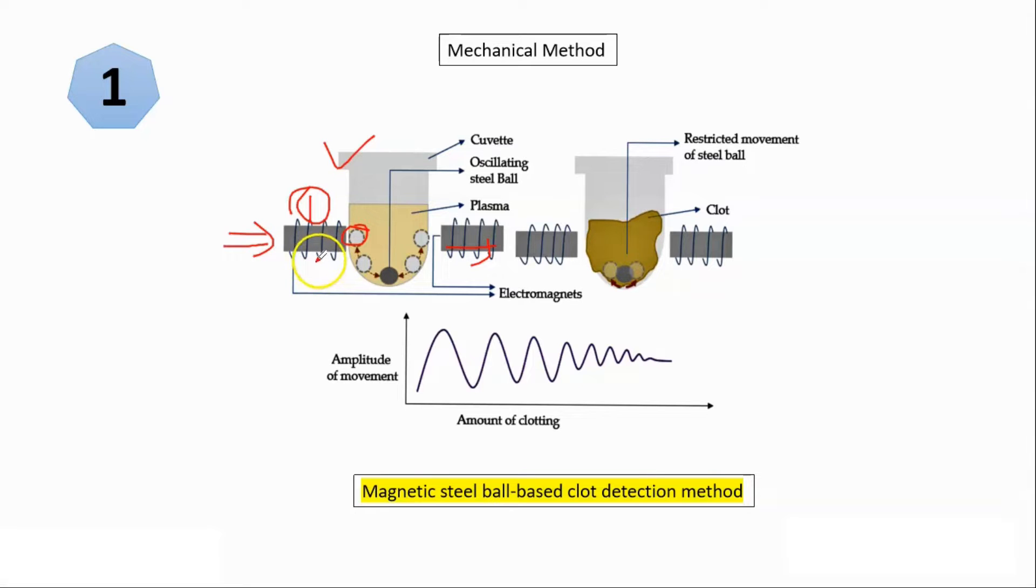After some time it gets deactivated and this one becomes activated. This alternately activates and deactivates. So what happens to the ball or stainless steel ball? When this magnet is activated, this will go here. When this is deactivated, it will again go down and this will activate then it goes here.